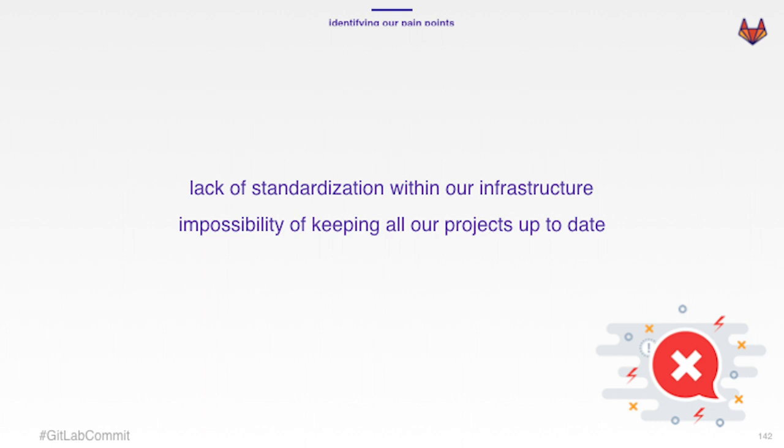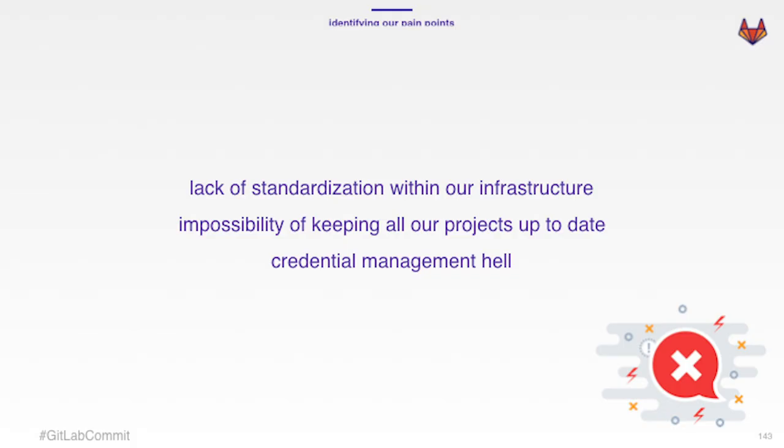The second pain point is the impossibility to keep our projects up to date. Kivi.com is about six years old, and some of our core services are six years old. That same service first ran on a single server, then moved to a virtual machine, then ran through Docker, and now it's just a Kubernetes pod. All those stages meant we had no proper way to replicate updates across all projects at scale. And finally, credential management — when we started this exercise, everyone had personal accounts to our cloud providers and would log in and do whatever they wanted. There was no proper role management or anything.